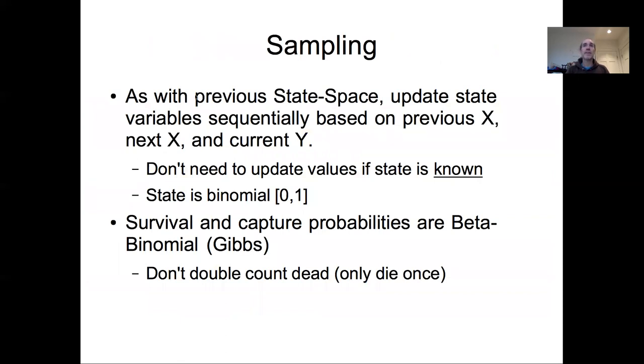So within an MCMC, as within our previous state space model, we're going to update the state variable sequentially based on the previous X, the next X, and the current Y. Those are the three things that go into estimating the probability of latent X, noting that we do not need to update values if the state is known. So if we know 100% probability that an individual has to be alive because it was observed to be alive or we observe it to be alive in the future, we don't need to update those states. We only need to update the states on the individuals we don't know whether they're alive or not.